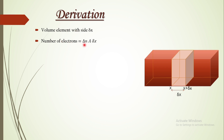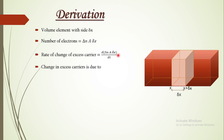The rate of increase of excess carriers is given by d/dt of (delta n · A · delta x). This tells us how the number of excess carriers changes with time. The factors on which the excess carriers depend are: recombination, diffusion of electrons, and drift.